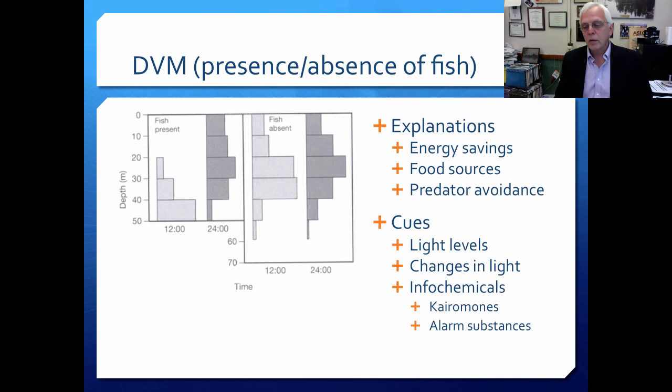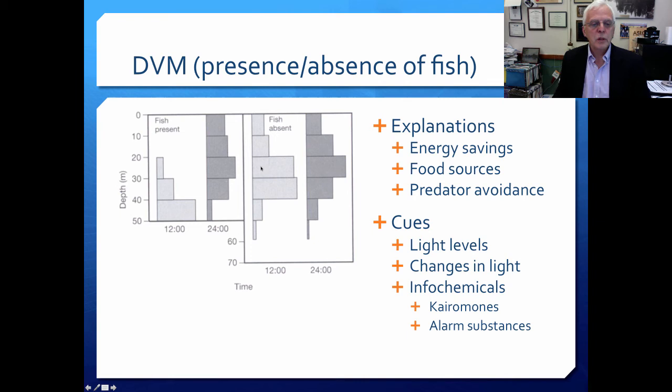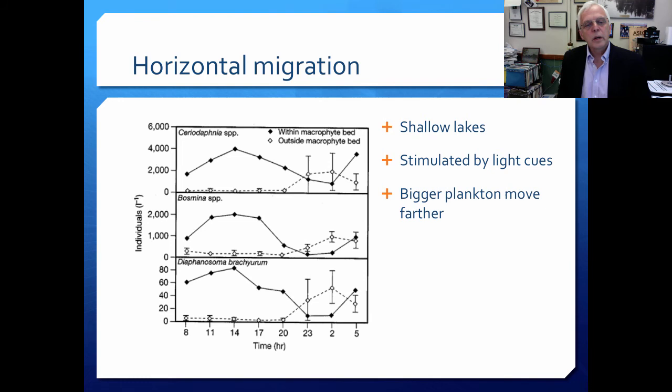The cues that have been suggested include light levels, changes in light levels, and various info-chemicals — things like kairomones and various alarm substances. Here we see a contrast in the position in the water column when fish are present versus absent. When fish are present in the system and it's light, the zooplankton tend to be at the bottom; when it's dark, they tend to be up in the water column. When fish are absent, they're up in the water column feeding virtually all of the time. That's from some experimental work.